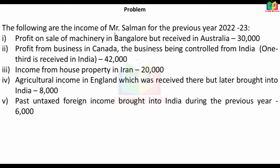The following are the income of Mr. Salman for the previous year 2022-23. Profit on sale of machinery in Bangalore, but received in Australia — this is Indian income. Profit from business in Canada, the business being controlled from India, and one third is received in India. So we can treat it as Indian income — received in India and controlled from India.